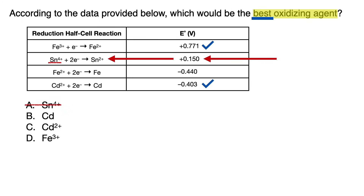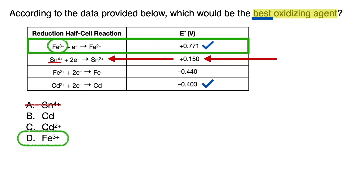Here's the tip that makes the hard part of this question type a no-brainer. For best oxidizing agent, always go to the most positive E value cell and choose the most positive ion. That's it — you don't even have to think about whether it's the ion on the left or right of the half-cell reaction, or flip anything. Just choose the answer with the most positive ion in the most positive E value cell.